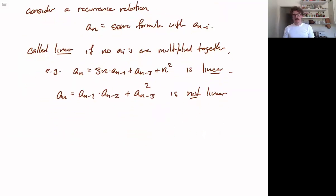We are only going to be dealing with linear recurrence relations, which is things of this form. And for linear recurrence relations, let's make some extra definitions within that. So it is called homogeneous if there are no extra terms without ai's.